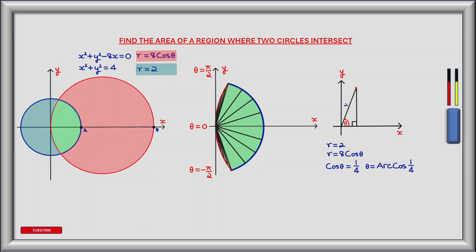We have two areas to compute: the first from theta equals zero to an unknown angle where the two circles intersect, and then from that same angle to pi by two. We can use the two polar equations to find this unknown angle. At the point of intersection, r equals two. Substituting into the equation r equals 8 cos theta gives cos theta equals a quarter, and therefore theta equals arccos of a quarter.